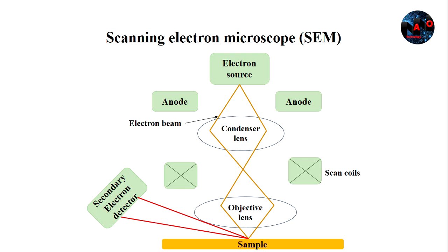Signals are detected and amplified with the help of electronic devices, displaying them as images on a cathode ray tube. Raster scanning is synchronized with the microscope. The displayed image is a distributed map of the signal intensity emitted from the scanned area of the specimen.